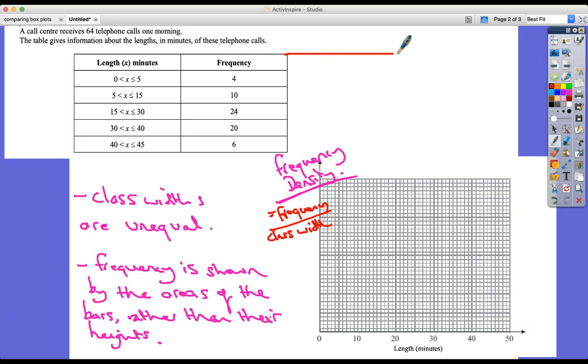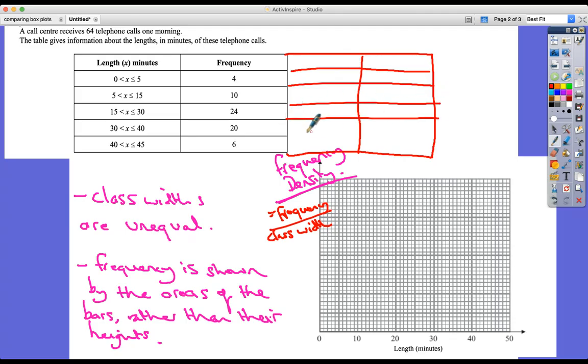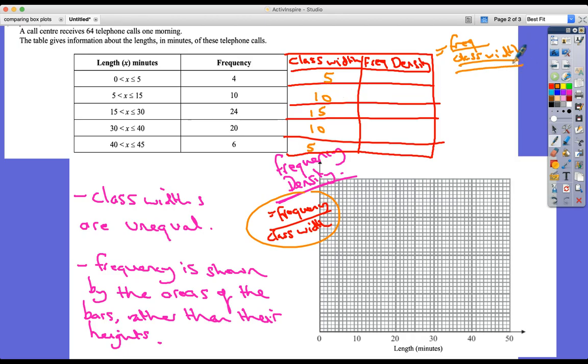So the first thing I'm going to have to do is actually extend this and put two more columns. The first of these is class width and the second is frequency density. Now what's the class width in the first one? It's 5, then we've got 10, then we've got 15, then we've got 10 again, and then we've got 5. Frequency density is frequency divided by class width.